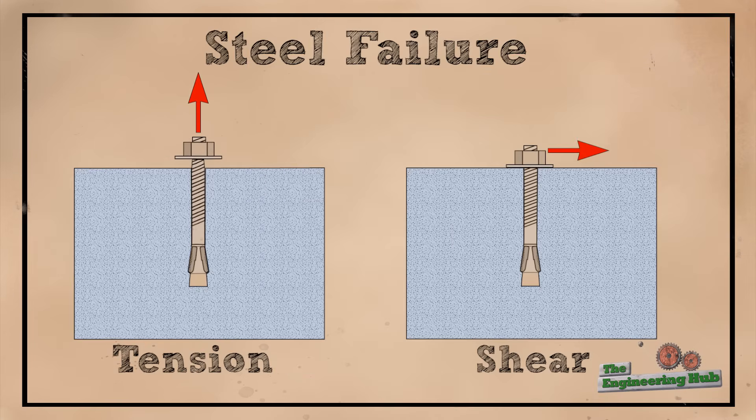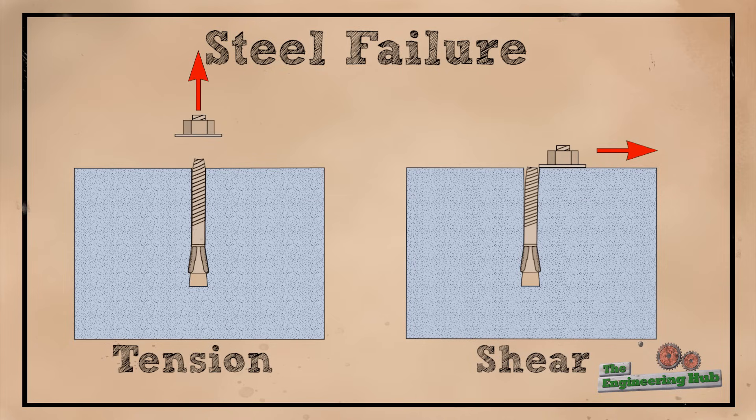Focusing on the steel first, failure can occur under tension loading, or under shear loading. Failure in the steel generally occurs when the anchor bolt diameter is too small for the loads being applied.